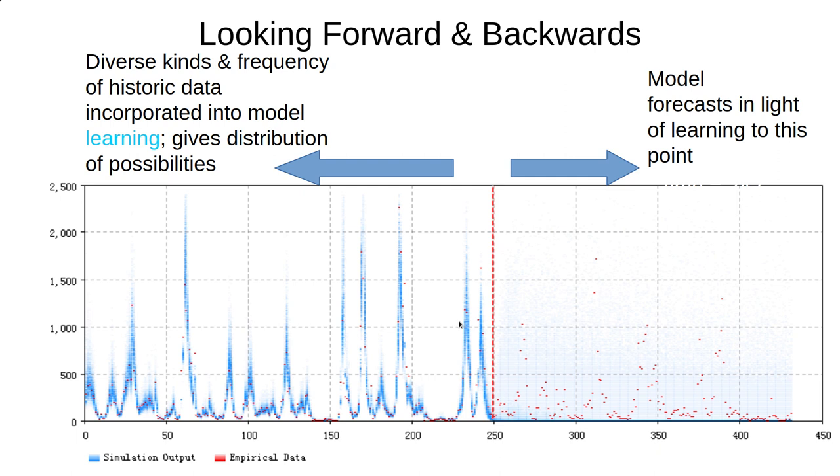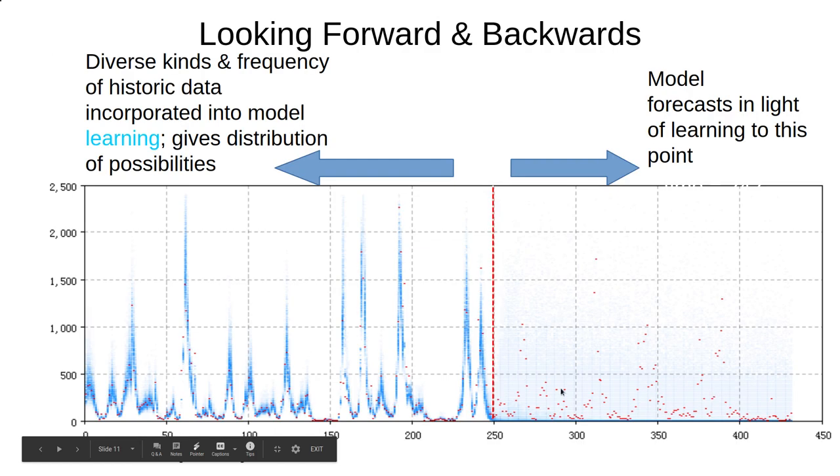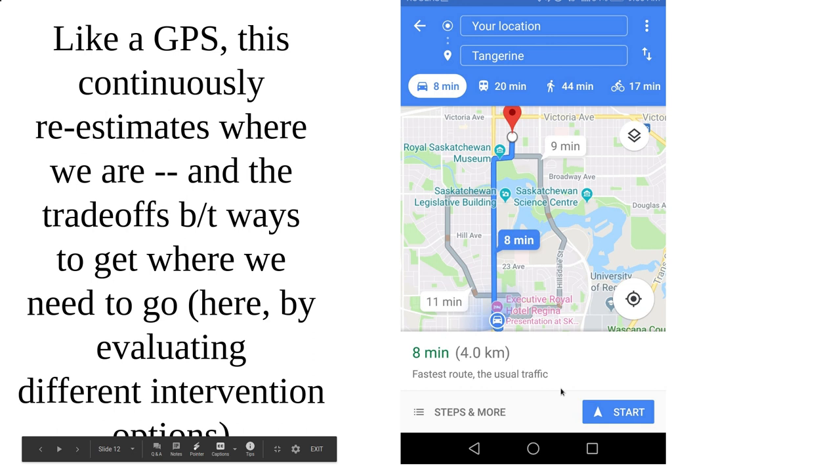We want a model that learns over time and that learns about contact patterns and the fraction of oligosymptomatics and the fraction of people that are seeking care, etc., and can anticipate going forward in light of that learning. Sometimes they may give us a tighter distribution going forward, the anticipation of an outbreak in the near future, or sometimes looser.